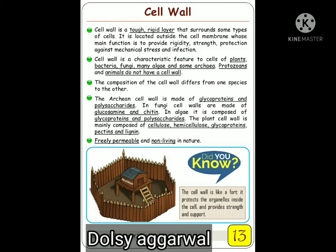The cell wall is an organelle or boundary that protects the organelles inside the cell and provides strength and support. The major function of the cell wall is to save the cell from any kind of harm. The organelles inside the cell are protected just as a boundary of a home protects what is inside — that is how the cell wall functions.